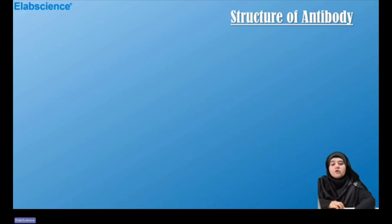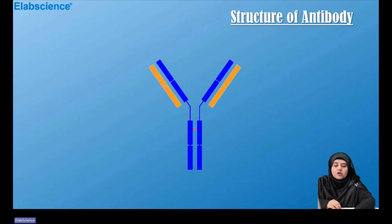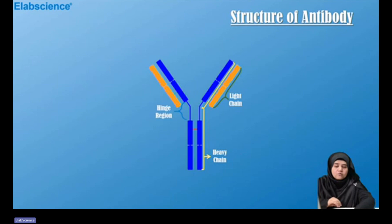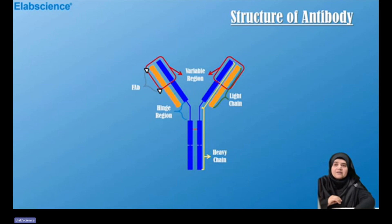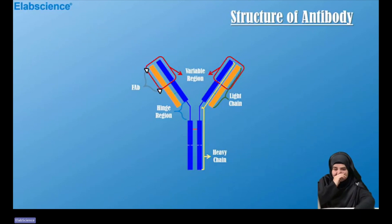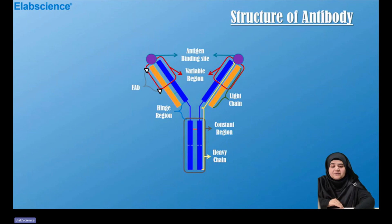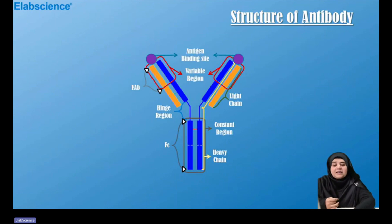An ordinary antibody has a basic structure of four polypeptide chains — two identical heavy chains and two identical light chains — held together by non-covalent or covalent disulfide bonds called the hinge region to form a Y-shaped unit. The top of the Y-shaped structure is called the variable region, or fragment antigen binding (Fab) region, which binds to a specific part of the antigen called an epitope. The constant region of the Fc determines the class and isotype of the antibody.